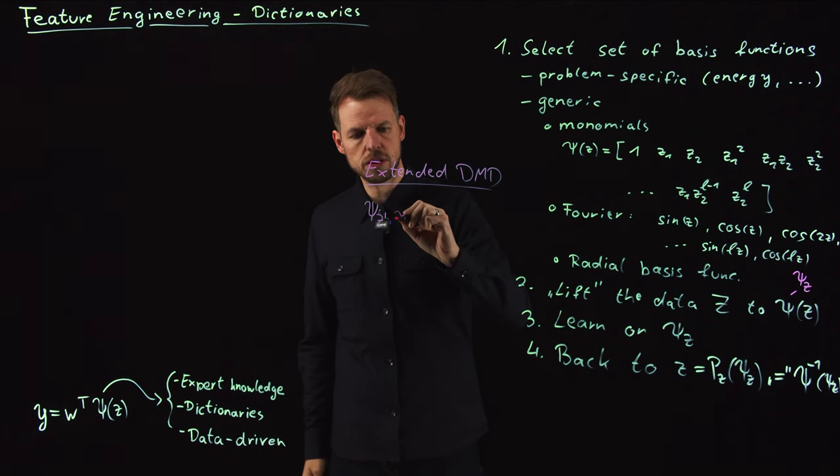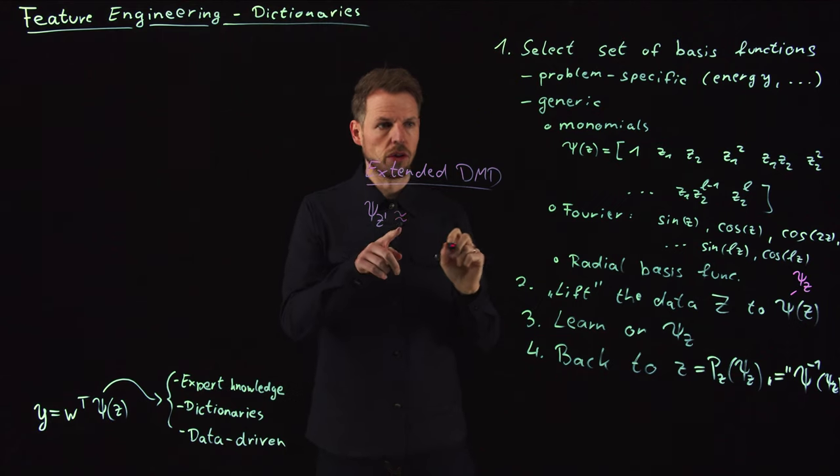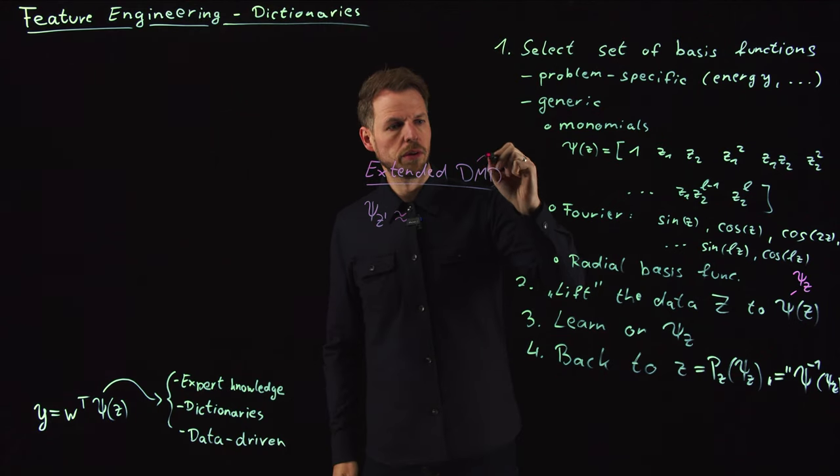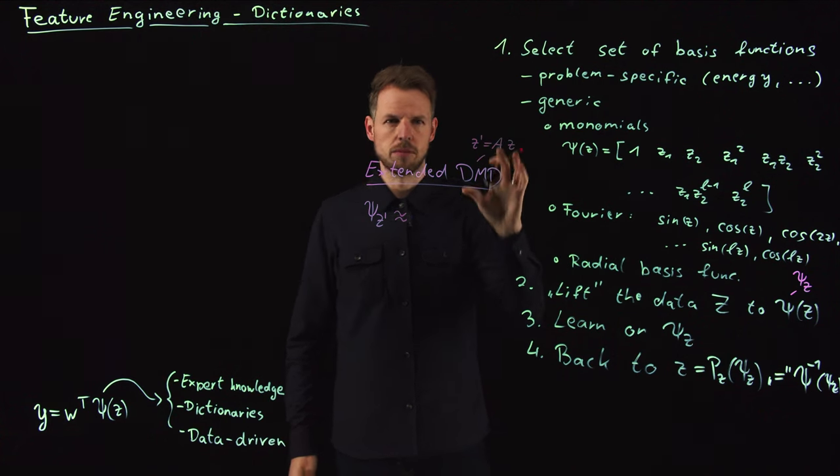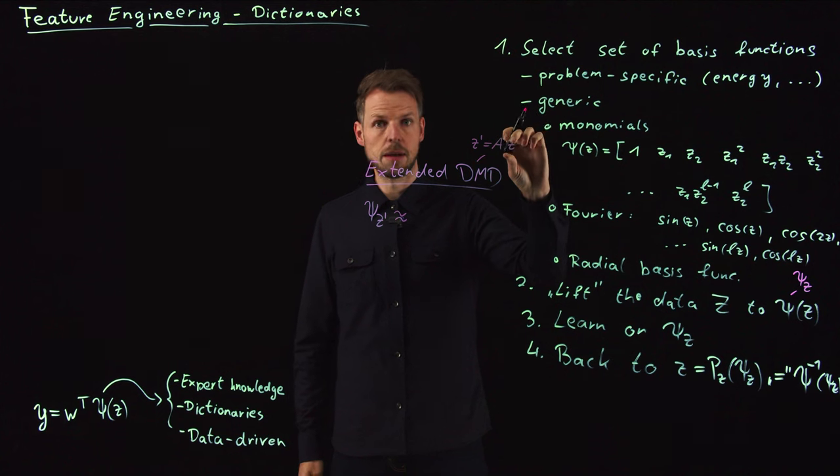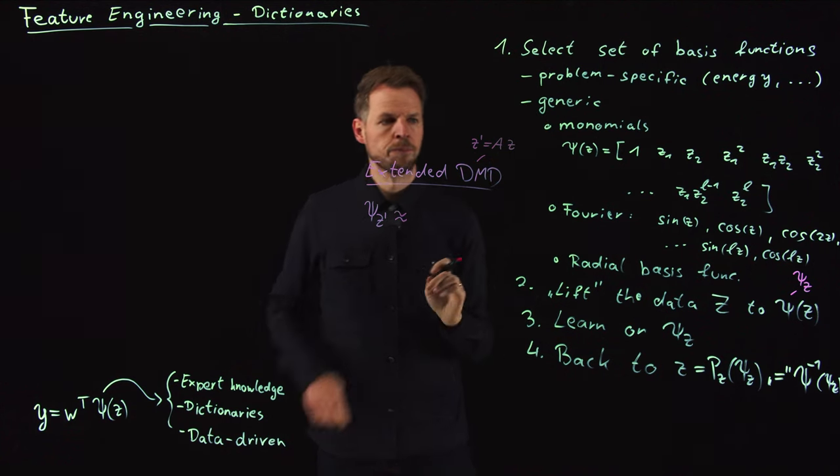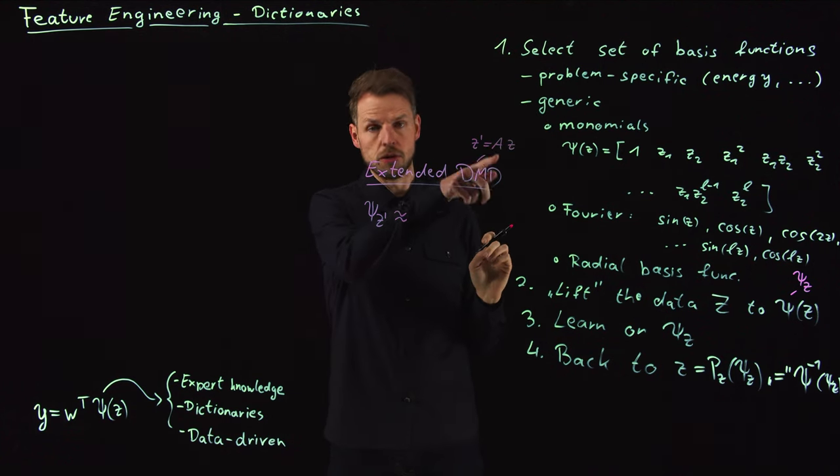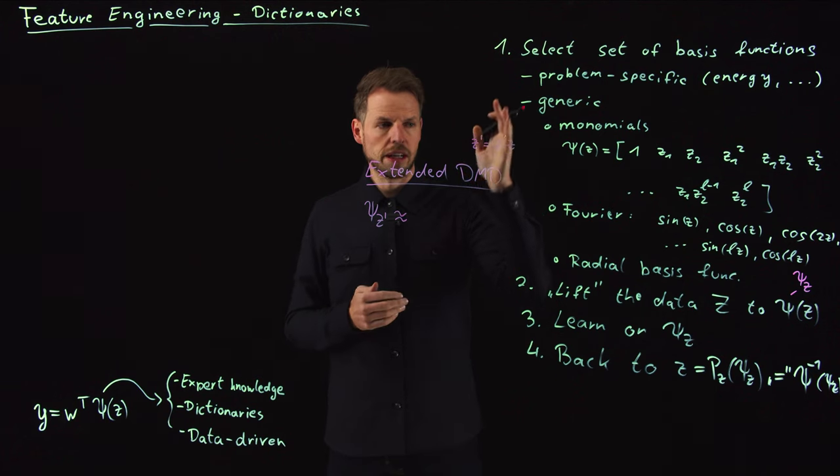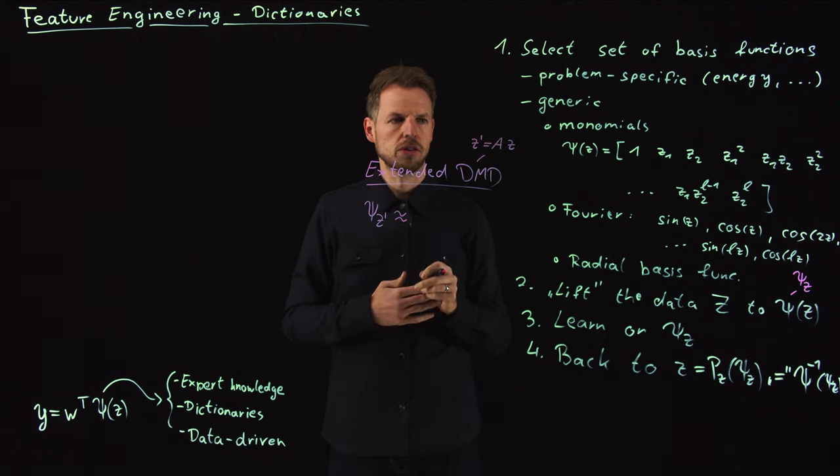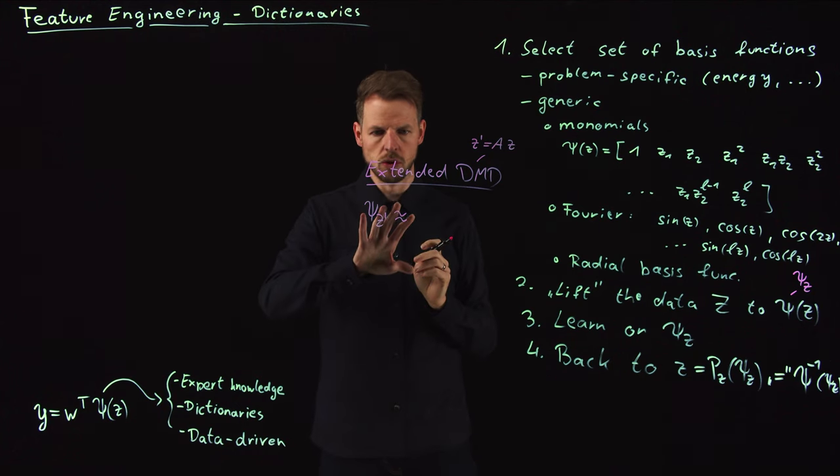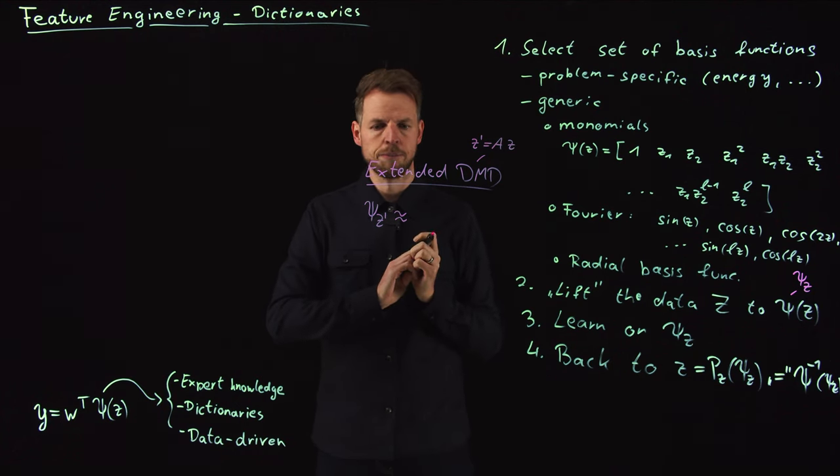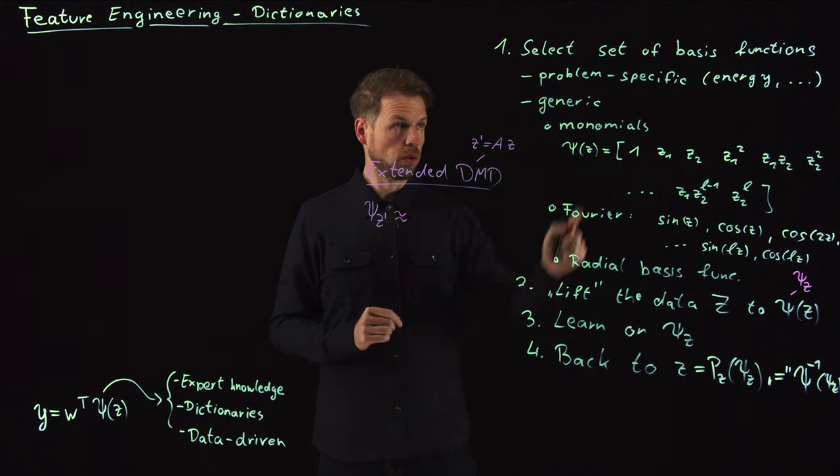So what we're going to say is now in the lifted version, we are not going to say, so remember here what we had in DMD only was Z dash was A times Z. So we assume that we can find a linear mapping from Z to Z dash and this would give us a matrix and then we could learn the eigenvectors, identify the eigenvectors and learn something about the dynamics in terms of these modes.